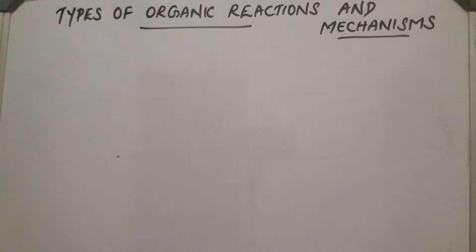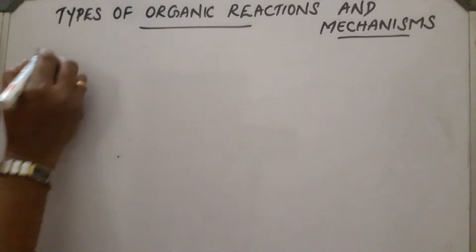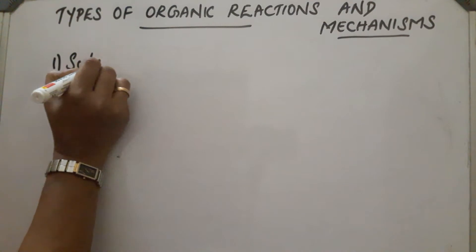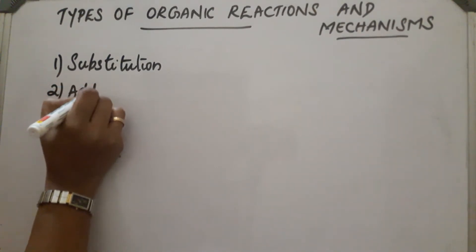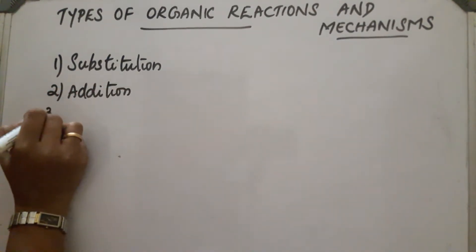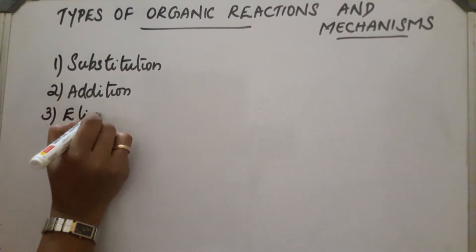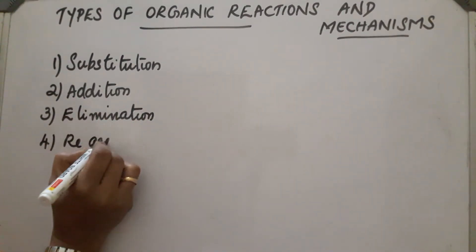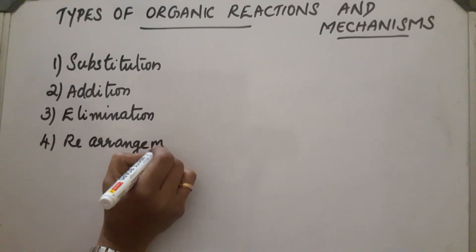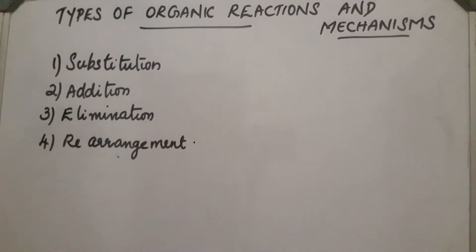Types of organic reactions and their mechanisms. Organic reactions are divided into four categories: the first is substitution reaction, the second is addition reaction, the third is elimination reaction, and the fourth is rearrangement reaction. Let us see them one by one.